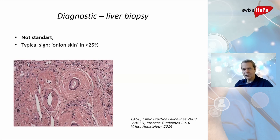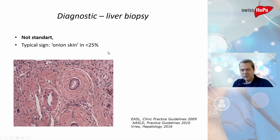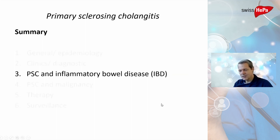Liver biopsy is not standard but can be used. A characteristic finding is the so-called onion skin lesion — fibrosis forming layers around the bile duct. This is found in only about 25 percent of patients but can support a PSC diagnosis.